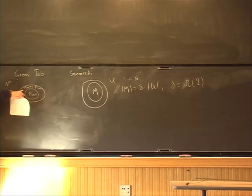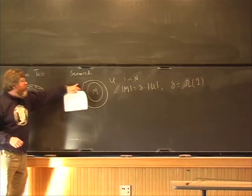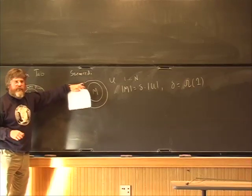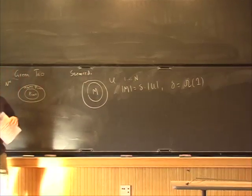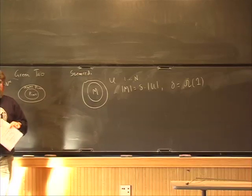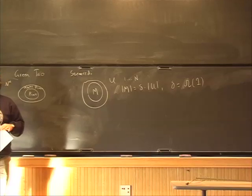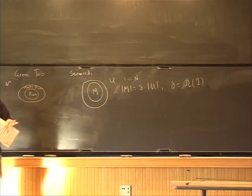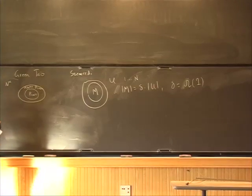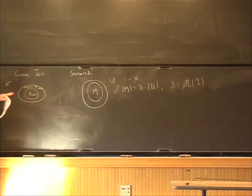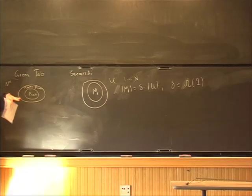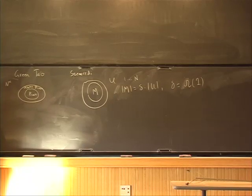If we look at Szemerédi's proof that arithmetic progressions exist in this set, it goes via certain quantitative tests that random elements of the set satisfy. There's a certain family of tests where, if you've got certain values under these tests for random elements in your set, then you have these arithmetic progressions.